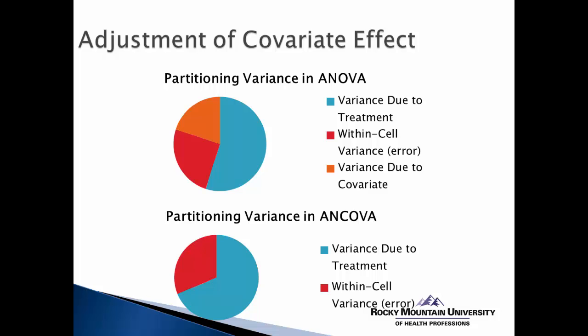We can see we have a much larger blue chunk in the pie chart now. So now we have a fairly large mean square between score and a much smaller mean square within score. Because we have a large mean square between and a small mean square within, we're going to have a large F-score, and we're going to be more likely to reject the null hypothesis.